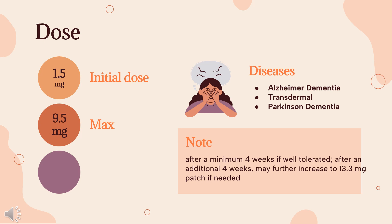Parkinson dementia, Oral: Initial: 1.5 mg PO Q12HR. Increase by 1.5 mg per dose Q4 weeks, not to exceed 6 mg PO Q12HR. Maintenance: 1.5–6 mg PO Q12HR. Transdermal: Initial: Apply 4.6 mg Q24HR. Increase dose to 9.5 mg Q24HR after a minimum 4 weeks if well tolerated. After an additional 4 weeks, may further increase to 13.3 mg patch if needed.